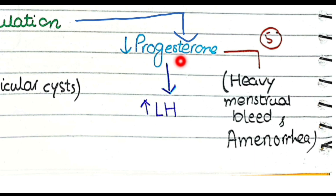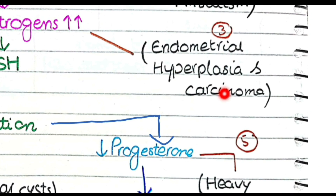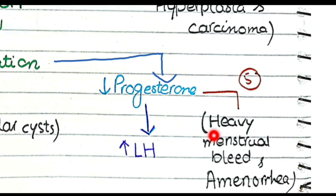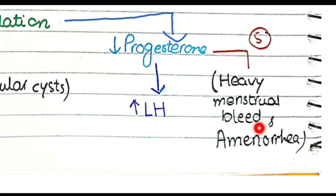There is also decreased progesterone. Progesterone is the hormone that stabilizes the endometrium. Normally, a cyclic interaction of estrogen and progesterone drives the menstrual cycle — estrogen causes proliferation of the endometrium while progesterone stabilizes it. With no progesterone, the estrogen-to-progesterone ratio increases, causing the endometrium to over-proliferate and develop hyperplasia.